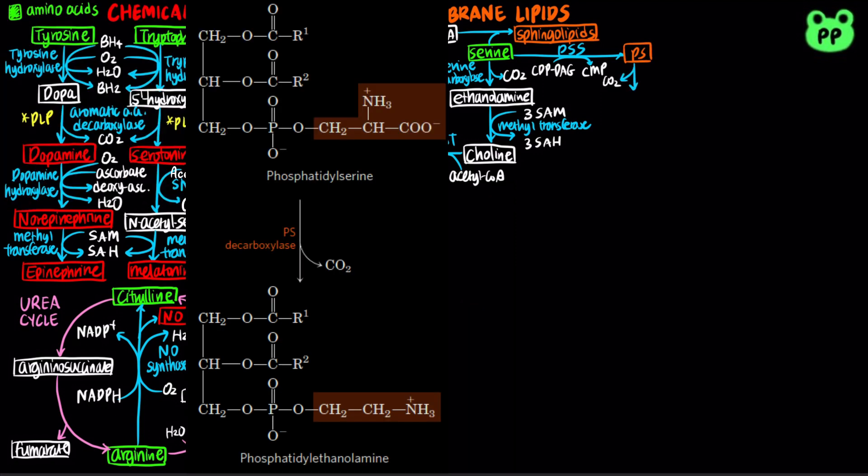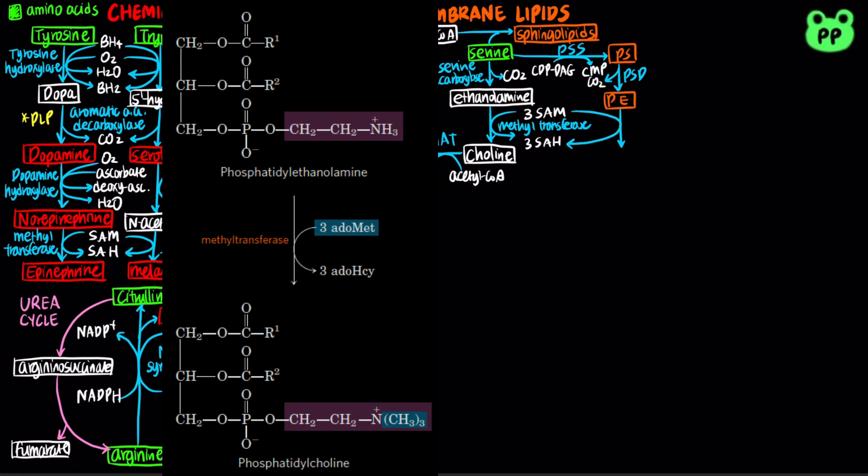Phosphatidylserine decarboxylase can convert phosphatidylserine to phosphatidylethanolamine, abbreviated as PE, which can be converted to phosphatidylcholine, abbreviated as PC, by three repeating steps of methyltransferases.